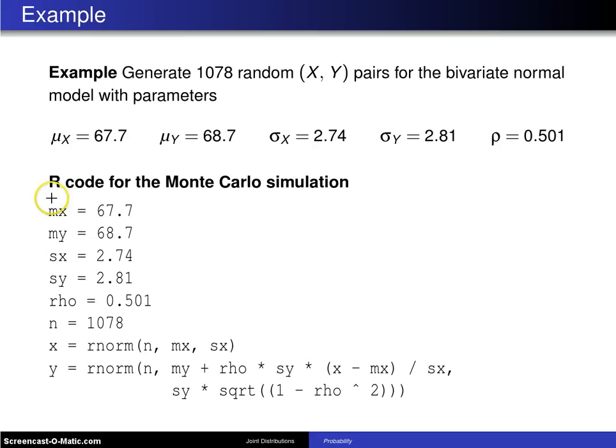So in this code, the first five statements here establish these five parameters as mx, my, sx, sy, and rho.